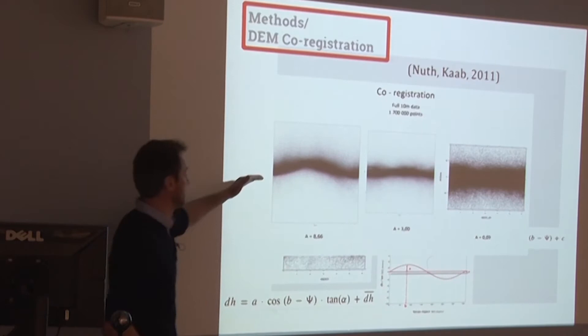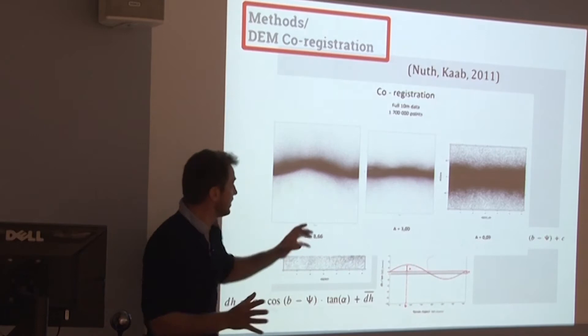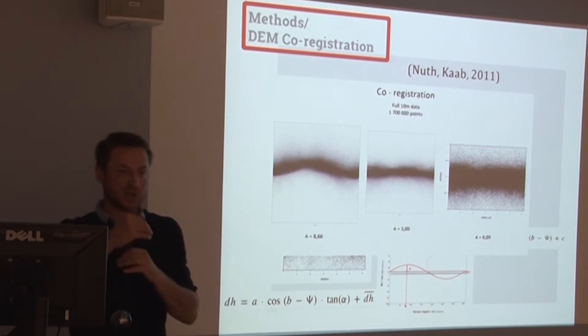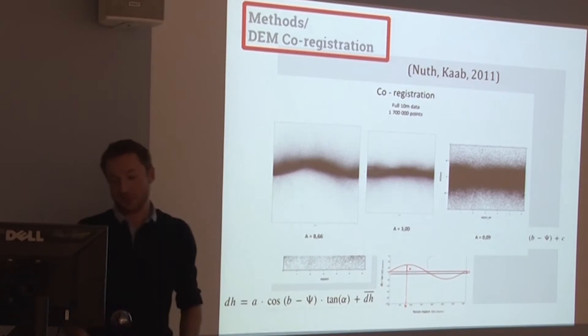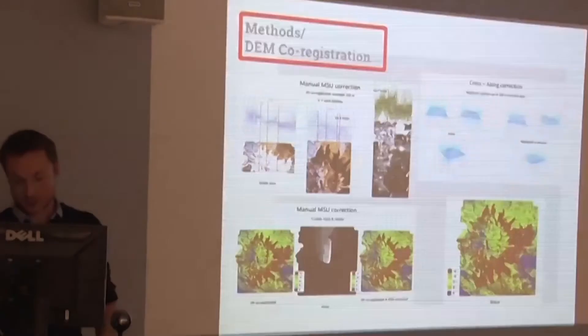By adjusting the parameters — shifting the models — you can calculate from this sinusoid how many meters you need to shift one elevation model relative to another, and then apply those changes to get clean results.